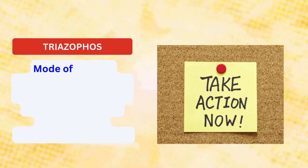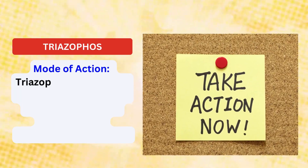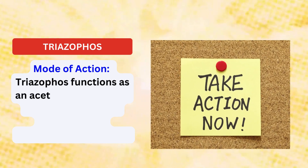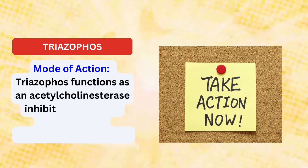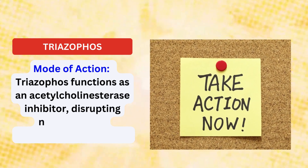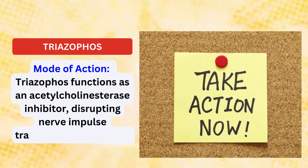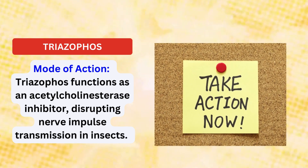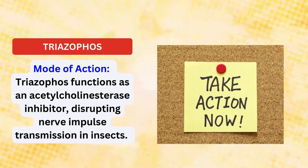Mode of action. Triazophose functions as an acetylcholinesterase inhibitor, disrupting nerve impulse transmission in insects. By inhibiting this enzyme, triazophose leads to the accumulation of acetylcholine at nerve synapses, causing paralysis and eventual mortality in target pests.